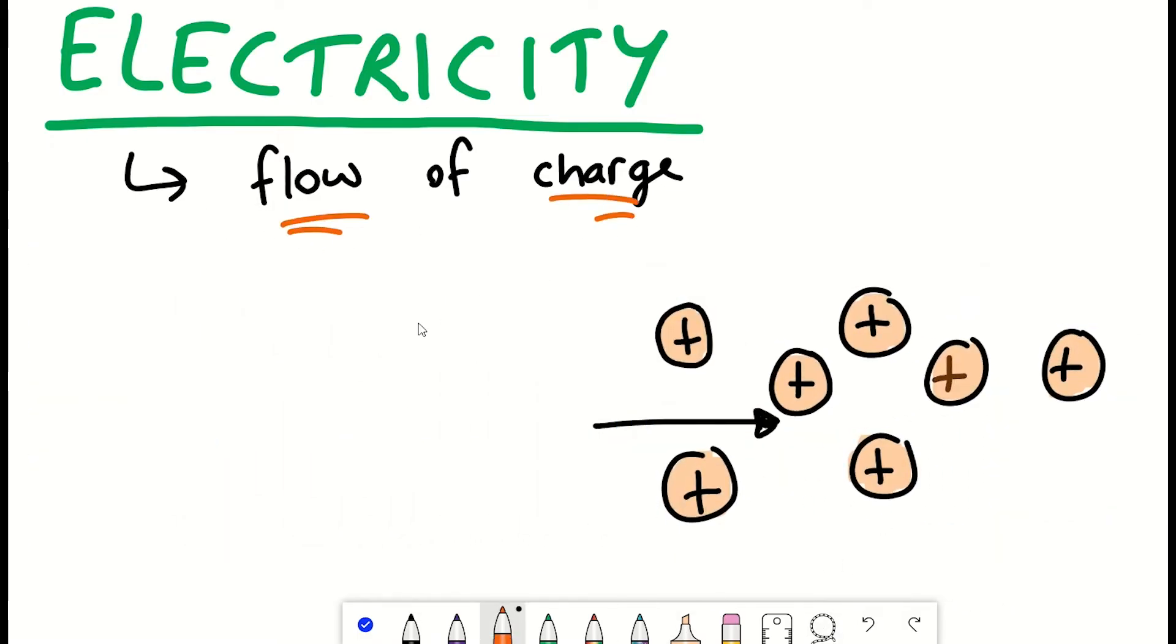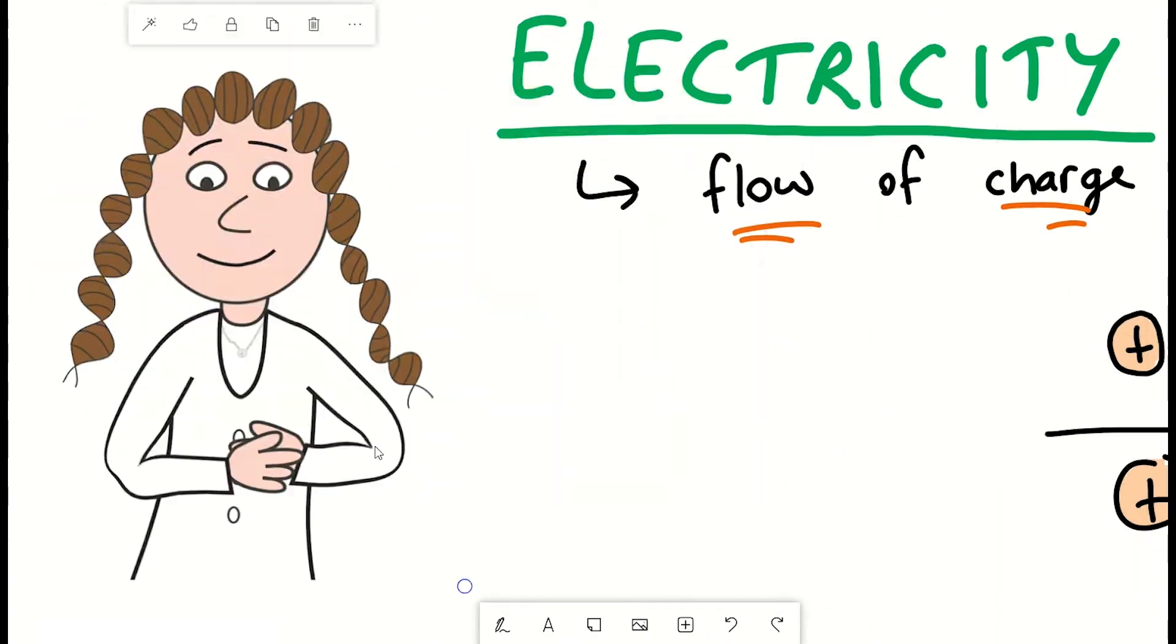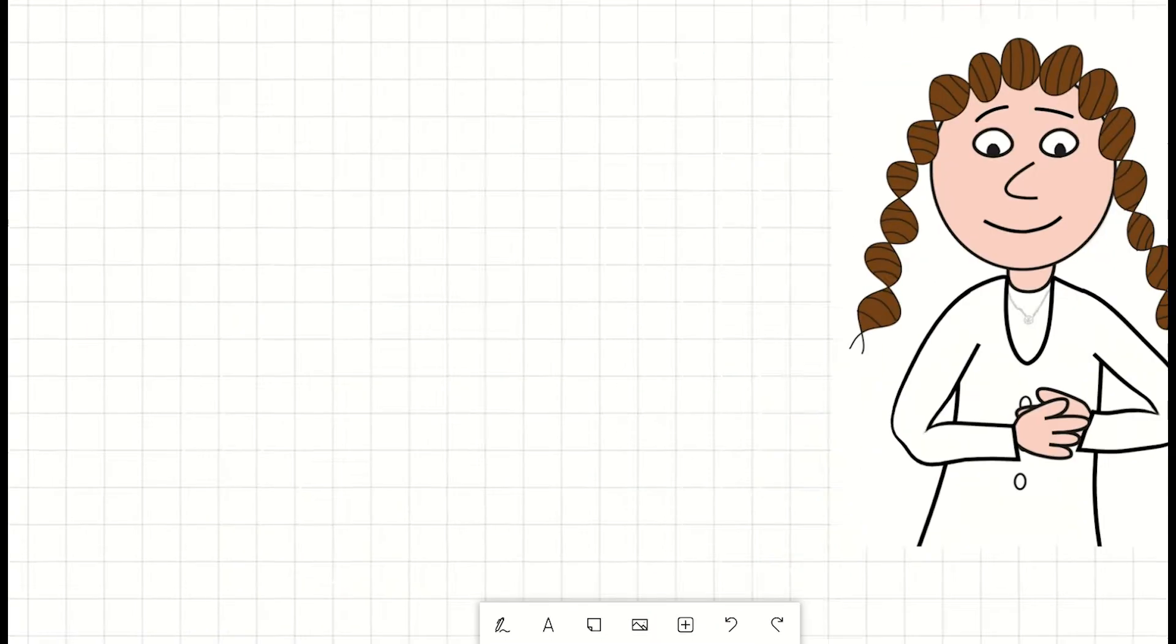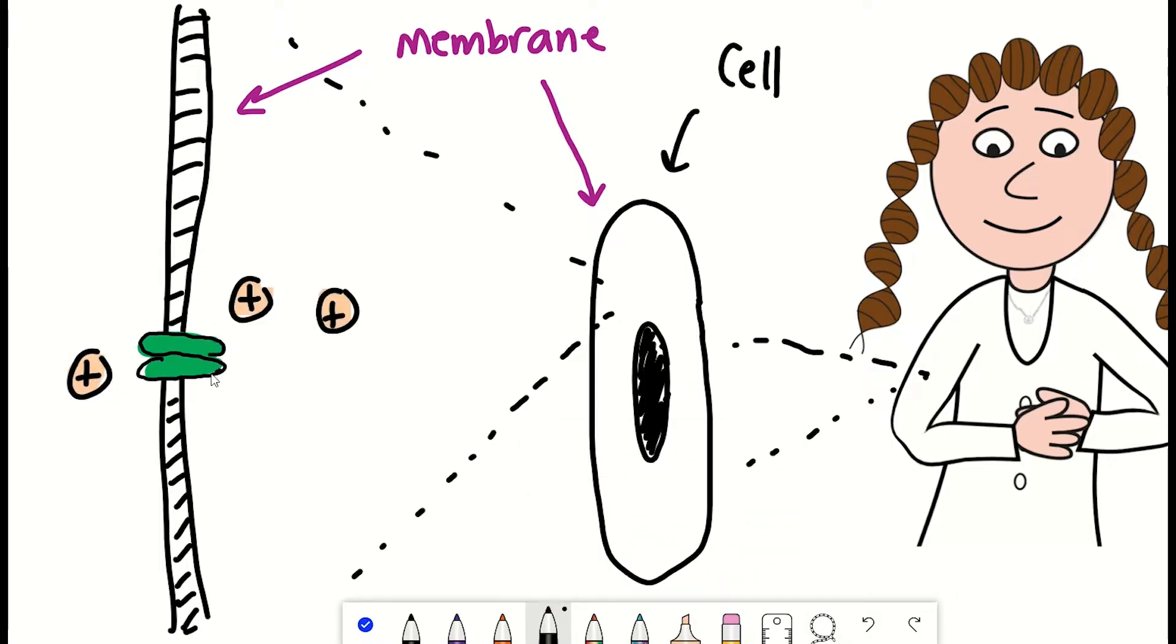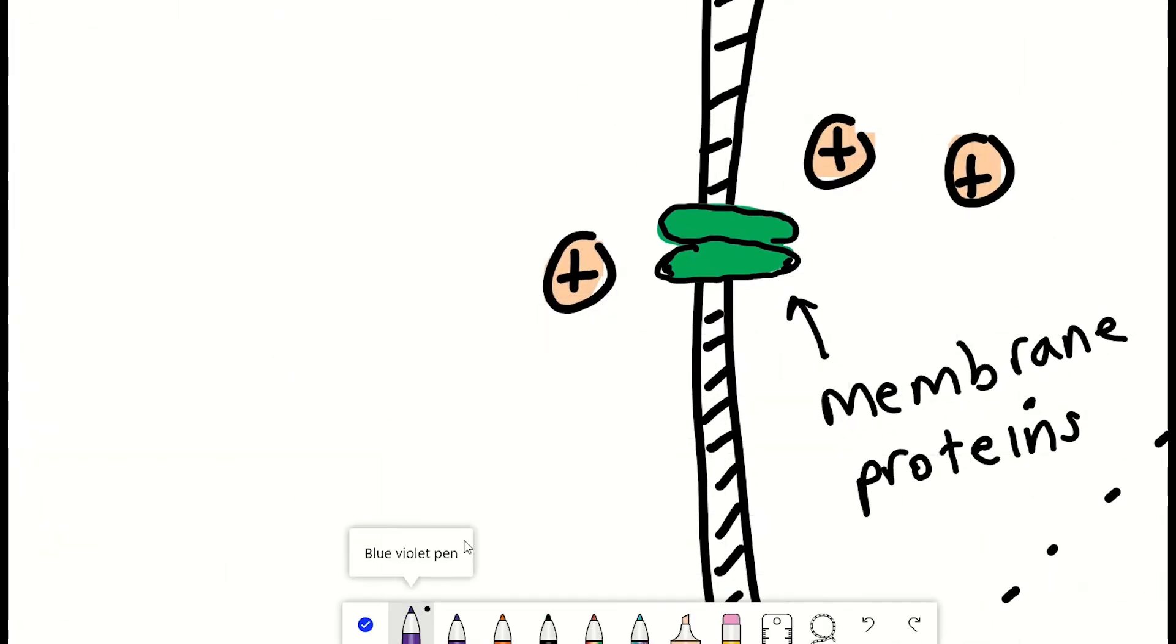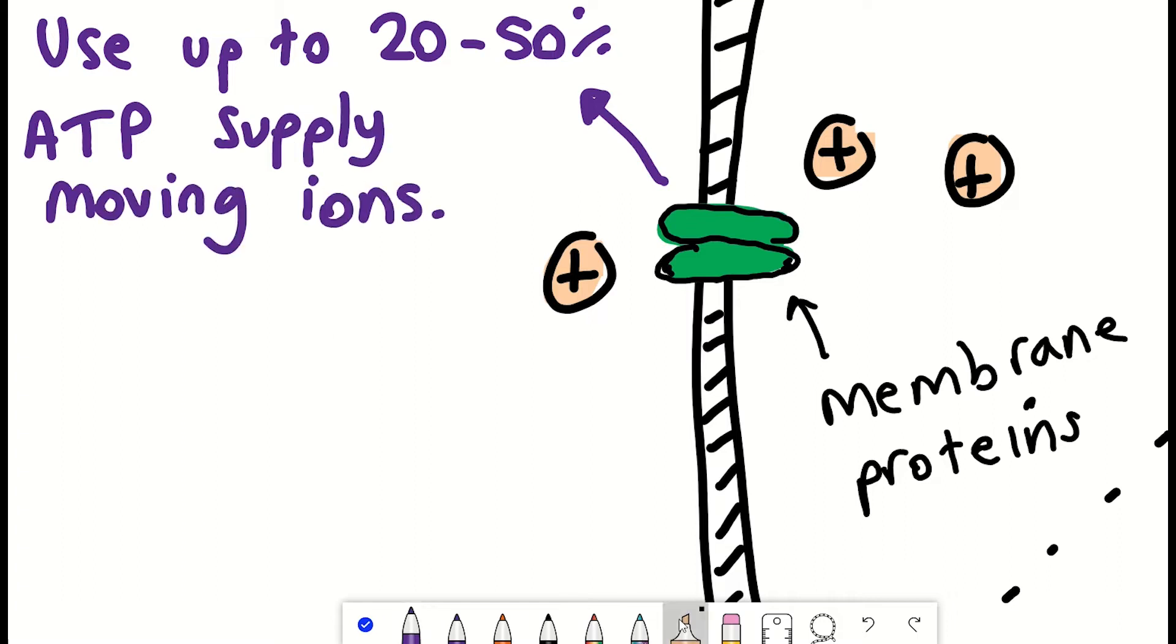And guess what? As I just mentioned, we have charged particles in our bodies, and these charges can be moved across the membrane of cells by different proteins. Estimates are that 20 to 50% of our ATP supply, the energy currency of the cell, is actually used up by one of these proteins.